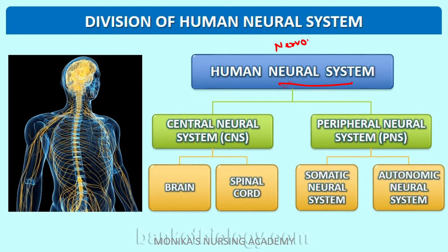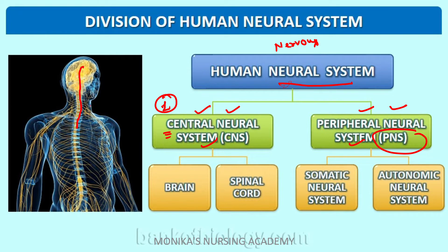We can divide our nervous system into two parts. First one is CNS, which is termed as the central nervous system, and the second one is PNS, which is termed as the peripheral nervous system. As the names indicate, central means the components included in CNS are present at the center, and peripheral means the things which are present at the periphery.